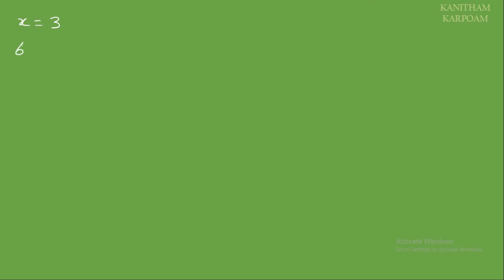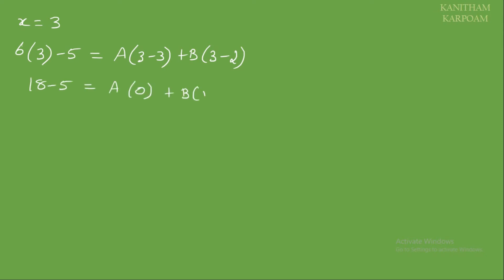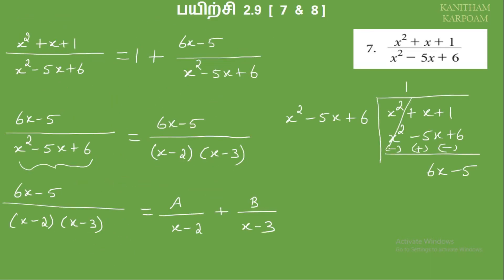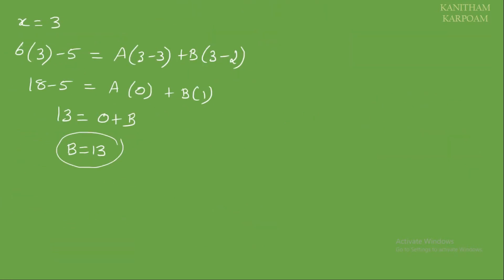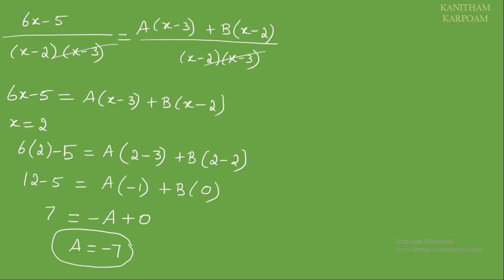So 7 equals minus A plus 0, therefore A equals minus 7. To find B, substitute x equal to 3: 6 times 3 minus 5 equals A times 3 minus 3 plus B times 3 minus 2. So 0 plus B, therefore B equals 13. So let's write the answer.